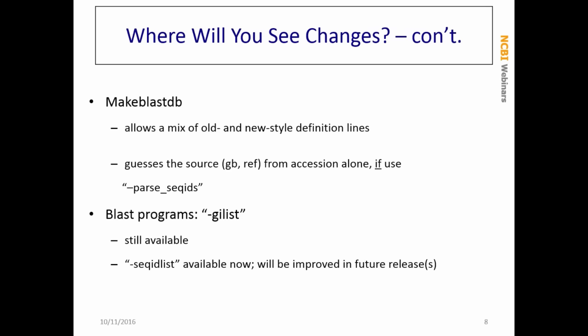In makeblastdb, it's been improved so it will accept both the old and new style definition lines, so you don't have to worry about changing everything just yet. It will also guess the source from the accession alone if you're using parse_seqids. Many of you use the GI list option to create a custom database for an organism or taxonomic group — that GI list switch is still available and will remain available. We also now have a seqid_list option that will take accession.version identifiers. It's a bit slow with large lists right now, but that will be improved in future releases, hopefully by the next release.